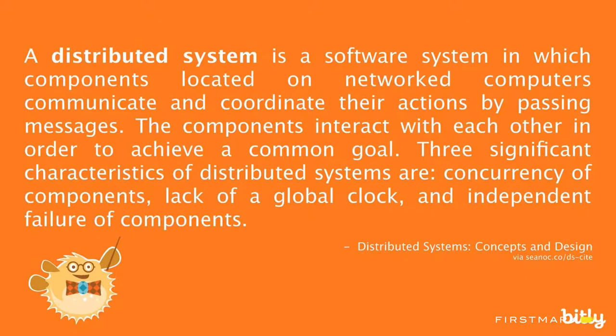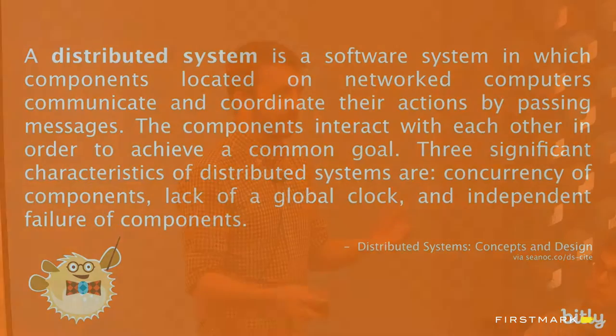It gets a little bit confusing. What do we mean by distributed systems? A distributed system is a software system in which components located on networked computers communicate and coordinate their actions by passing messages. You may be running in multiple processes on the same machine, or in two different machines in two different data centers on different continents. You can't assume you can put something into a JavaScript array and get it out the other end. The components interact with each other in order to achieve a common goal. If you have two systems running at the same time and they're not talking or doing the same thing, that's not a distributed system — that's just two things.